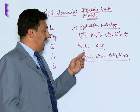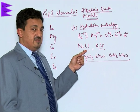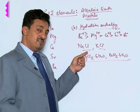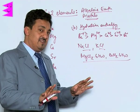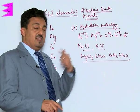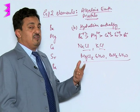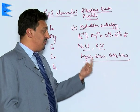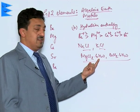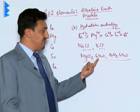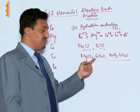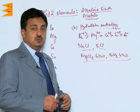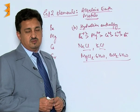Due to these higher hydration enthalpies, the salts of alkali metals always exist in an anhydrous state in nature, whereas the salts of alkaline earth metals absorb moisture and exist in the form of hydrated salts — for example, MgCl₂·6H₂O, CaCl₂·6H₂O, etc.